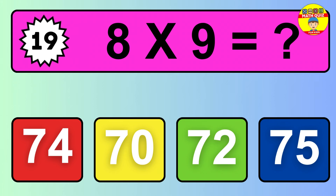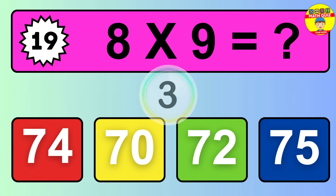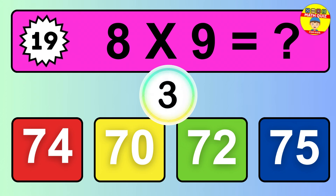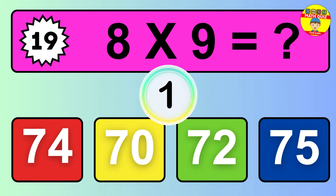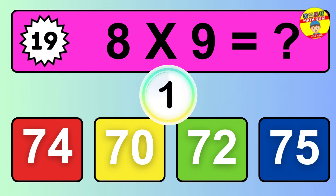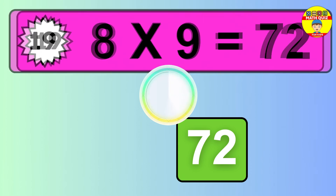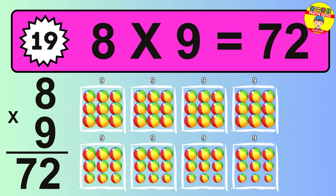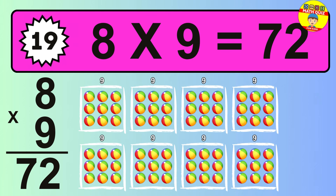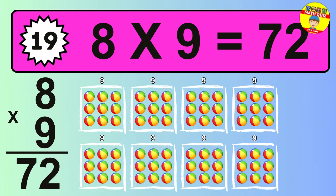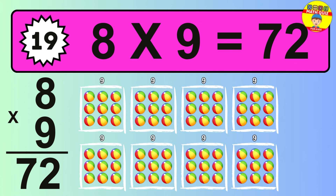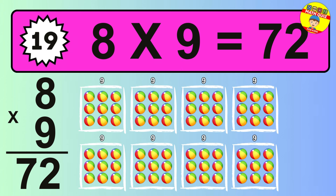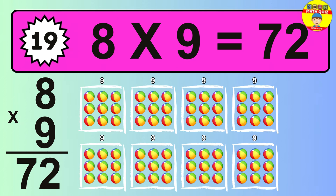Question 19. 8 times 9 equals what? The answer is 8 times 9 is 72. To calculate, we have 8 groups with 9 balls each one. So, how many balls do we have? 72 balls.